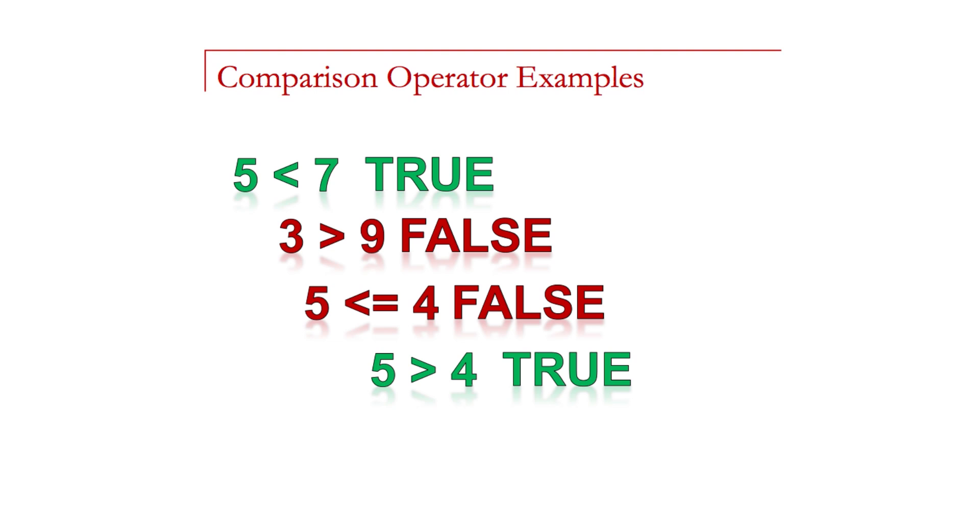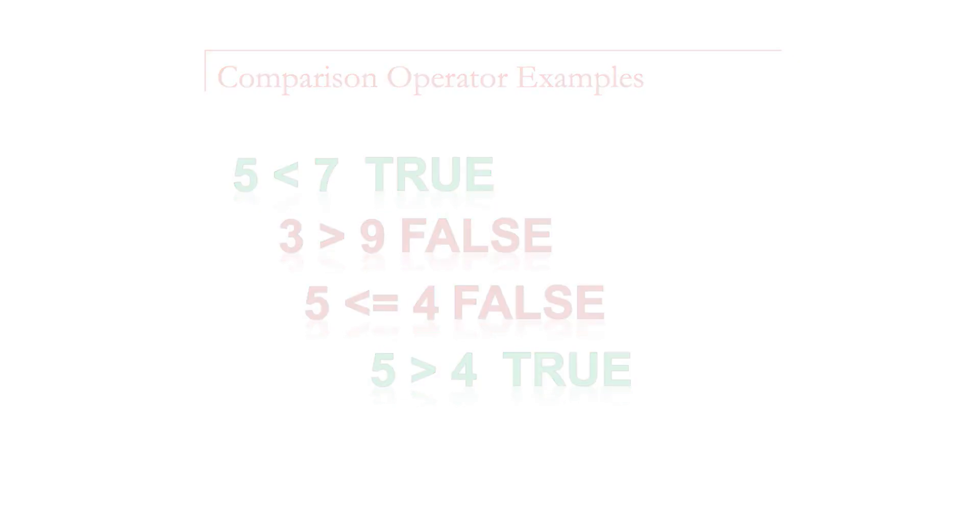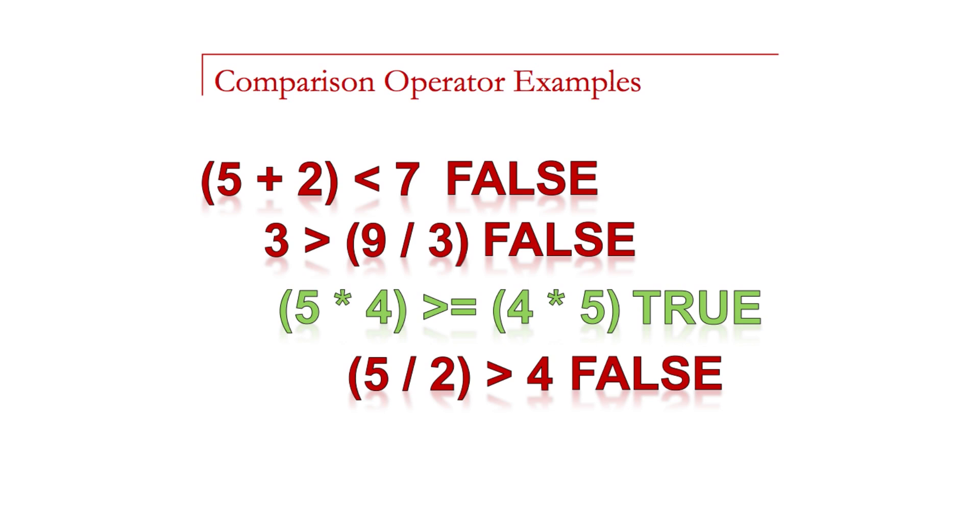Here are a few examples of what we mean by comparison operators. Is it true or false that 5 is less than 7? That's obviously true. 3 greater than 9, that's false. 5 less than or equal to 4, that's also false. But 5 is greater than 4, so that's true. Some other examples: if I place in parentheses 5 plus 2 less than 7, so that's really saying 7 is less than 7, so that's false. But 5 times 4, 20 is greater than or equal to 4 times 5, 20. So the equal sign here allows this to be true, otherwise if it was just greater than it would be false.